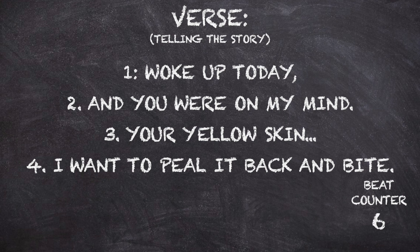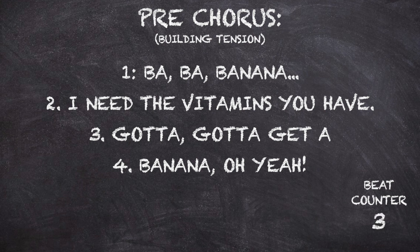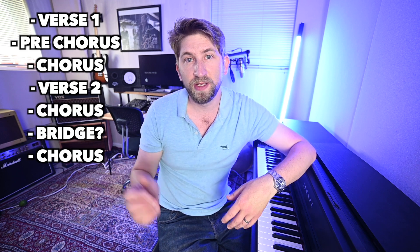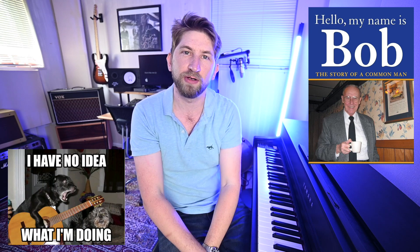What we need now is something to support our statement that bananas are, in fact, the best. Woke up today, and you were on my mind. Your yellow skin — I want to peel it back and bite. With that, I think we need one more quatrain to lead us into the chorus. We could call this a pre-chorus, and I usually like to change things up a little here. Ba-ba-banana, I need the vitamins you have. Gotta, gotta get a banana. Oh yeah. And with that, it really isn't much to write a second verse, repeat the chorus, and maybe add a bridge. And then like that — bish-bash-bosh, Bob's your uncle — now you've got a song.